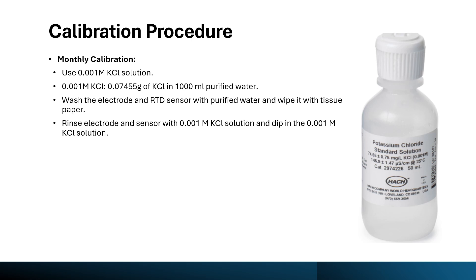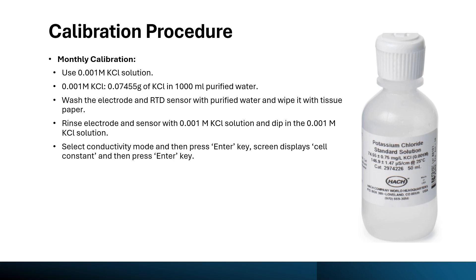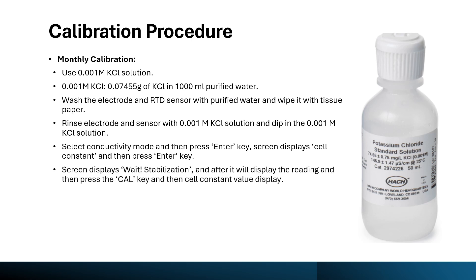Dip the electrode into the KCl solution. Select the conductivity mode and press the enter key on your conductivity meter display. The screen will display the cell constant — when the cell constant screen appears, press the enter key. After pressing enter, the screen displays stabilization and then shows the reading. Press the cal key, which will display the cell constant value. Once the cell constant value is displayed, press the enter key and type the cell constant value as 0.1.